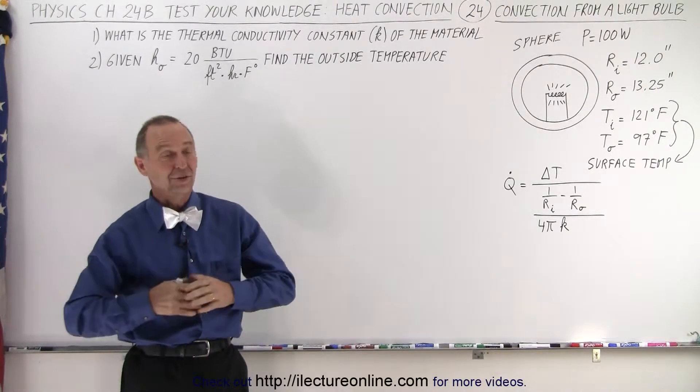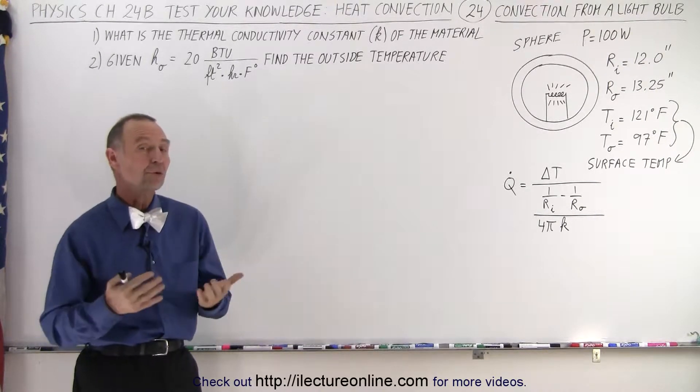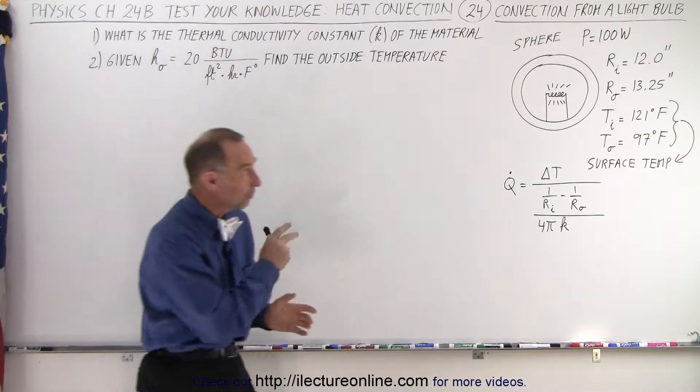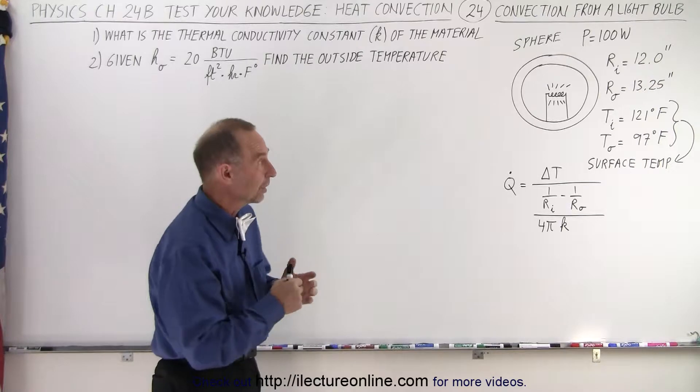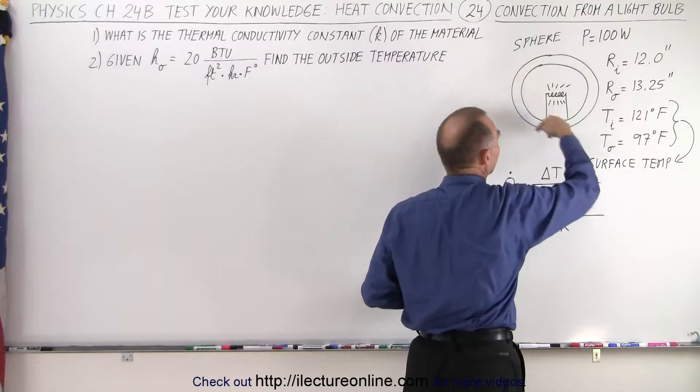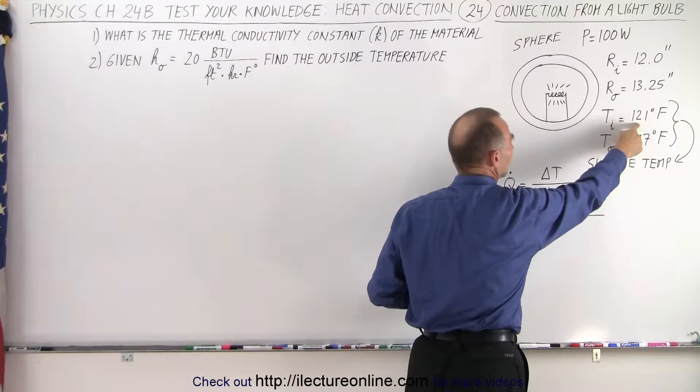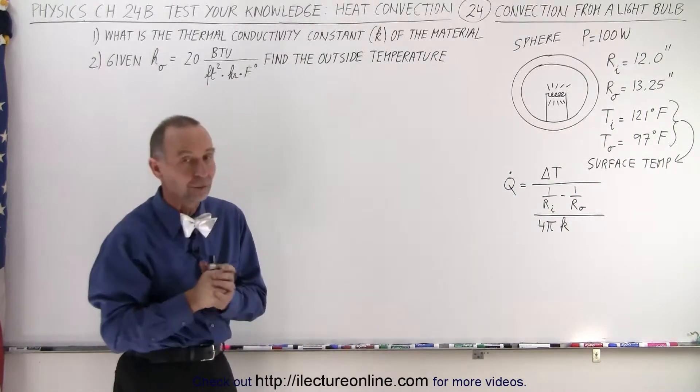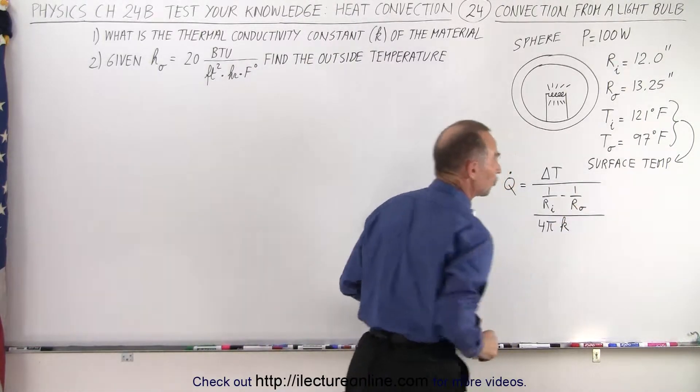Welcome to our lecture online. Here's our next example. Suppose we have a 100 watt light bulb. It has an inner radius of 12 inches, an outer radius of 13 and a quarter inches, and the surface temperature of the material encasing the light bulb has an inside temperature of 121 degrees Fahrenheit and an outside temperature of 97 degrees Fahrenheit, but keep in mind that's the surface temperature.